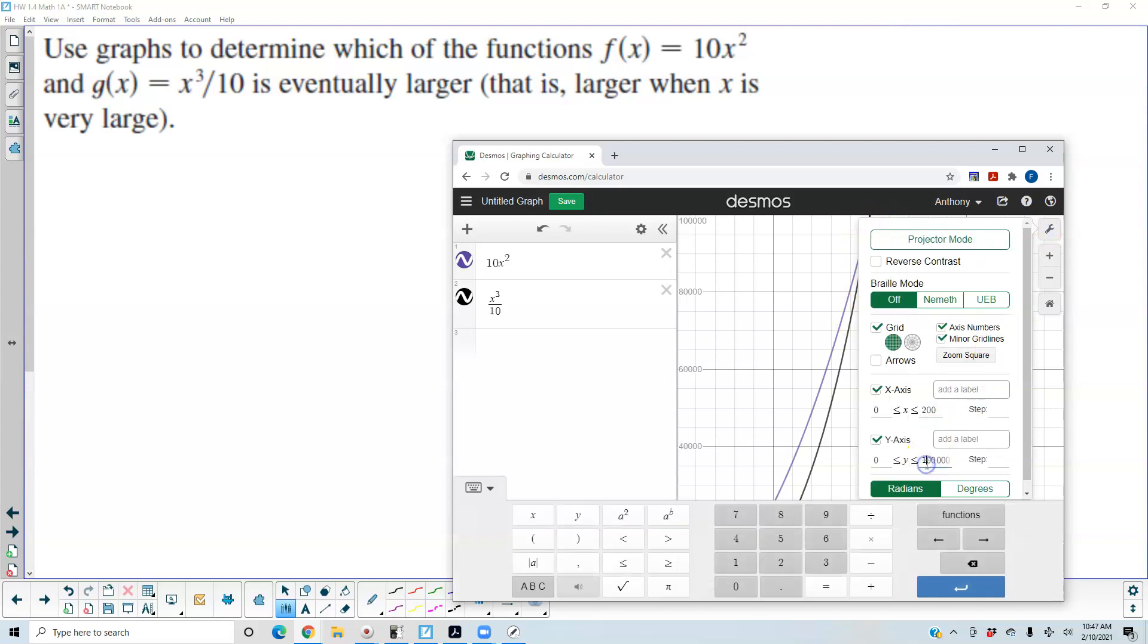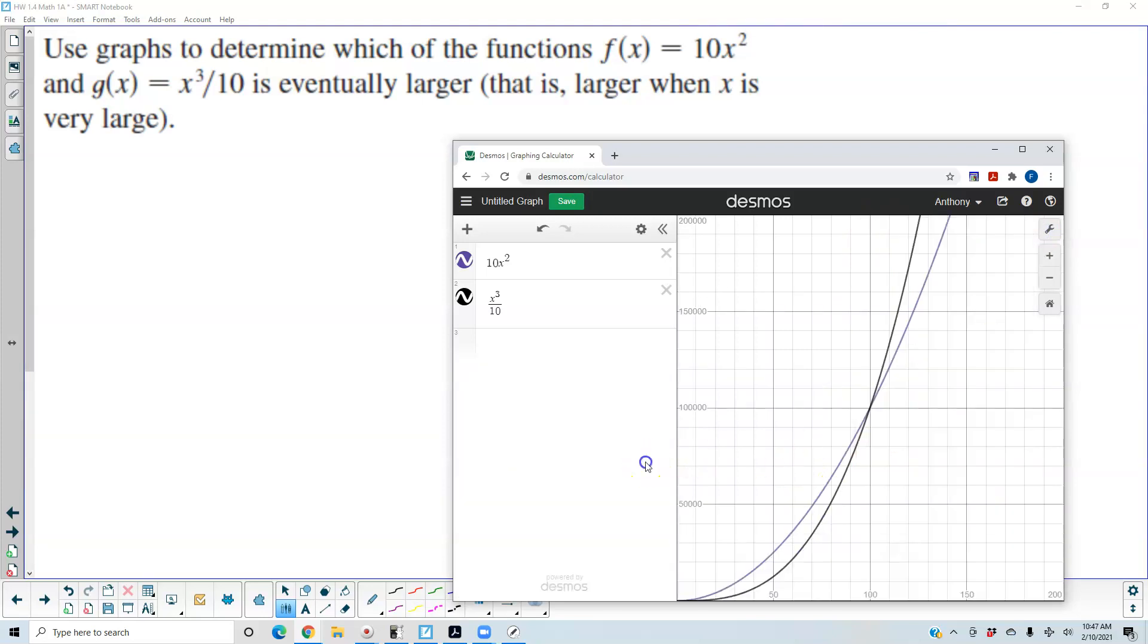So let's go to 200,000 for the y-max. Okay, so we can see here now that this graph represents g(x), and this graph represents f(x).